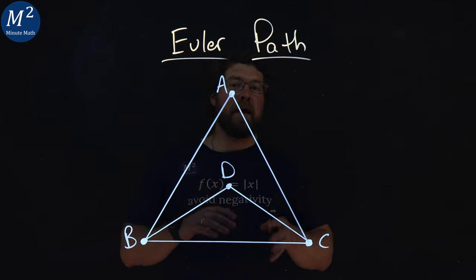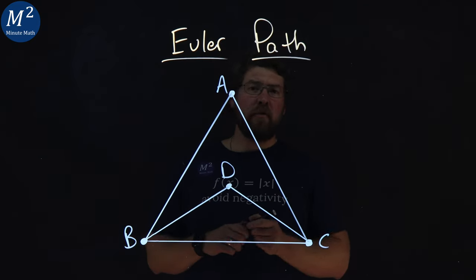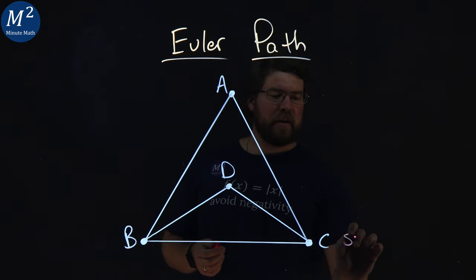So let's go find an Euler path on our graph, and let's start with our vertex C. We're going to start here.